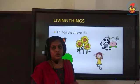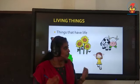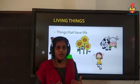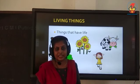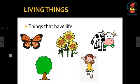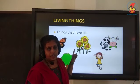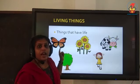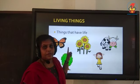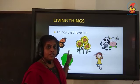Living things are those things which have life. Human beings have life — we are able to breathe, we are able to feel, we are able to move, and we can sense certain things. That is why we say human beings are living things. For example, let's look at the first picture — it's a picture of a butterfly. Let's check whether the butterfly has the features of a living thing. Can the butterfly breathe? Yes, definitely butterflies can breathe.